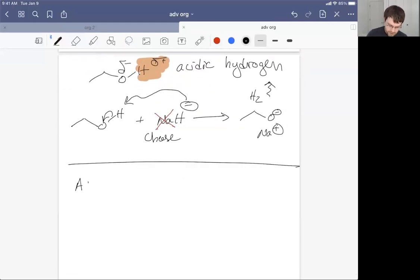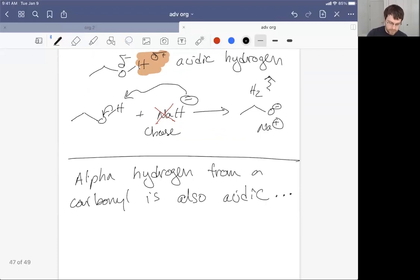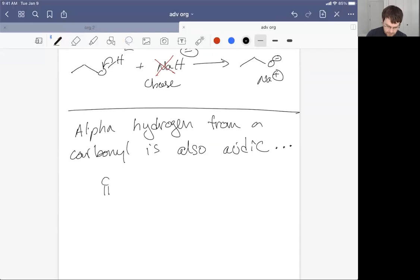But acidic hydrogens can take other forms. So acidic hydrogens can also occur at the alpha hydrogen. The alpha hydrogen from a carbonyl is also acidic. What that looks like is if we have a molecule like this, there are two alpha hydrogens. That is, if we have our carbonyl carbon, the alpha position is on the carbon next door.